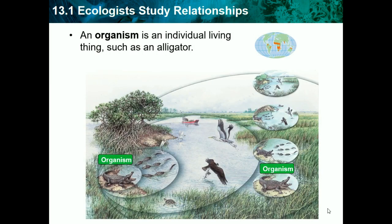An organism is an individual living thing, such as an alligator here. So this is our whole ecosystem, and this is our one organism — the alligator. An organism is just one living thing. It could be an alligator, it could be a tree, it could be a bird, it could be a turtle. It just has to be one living thing.